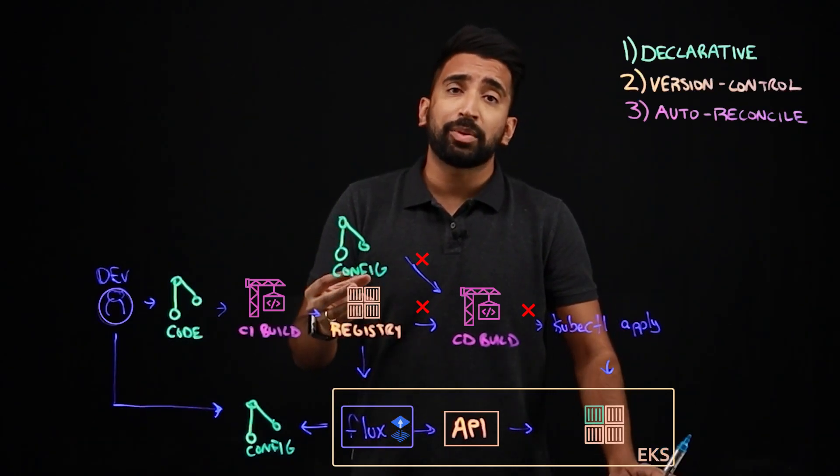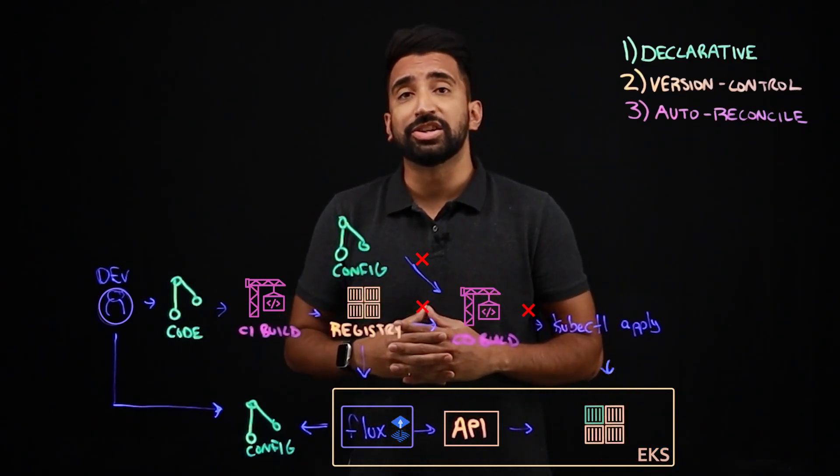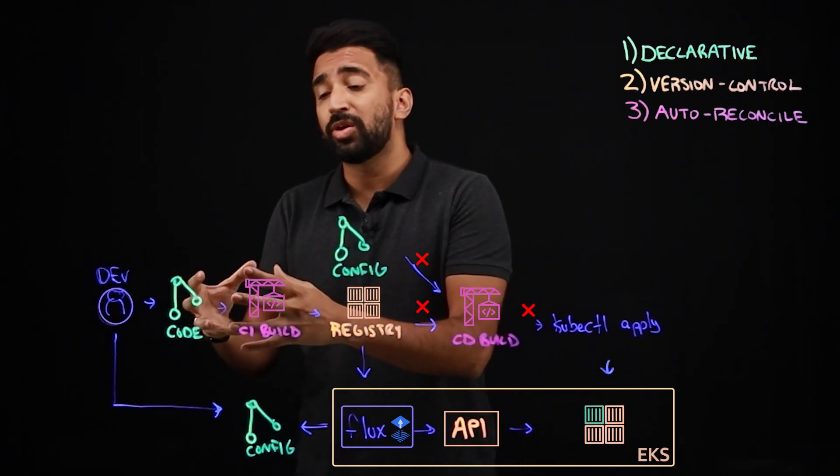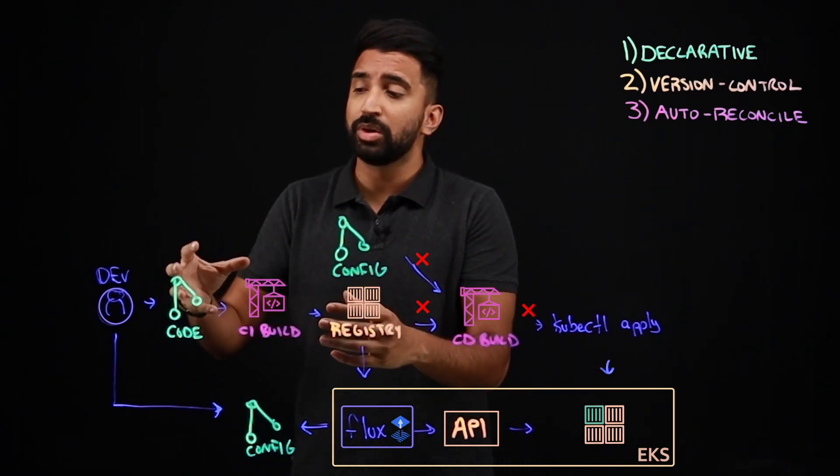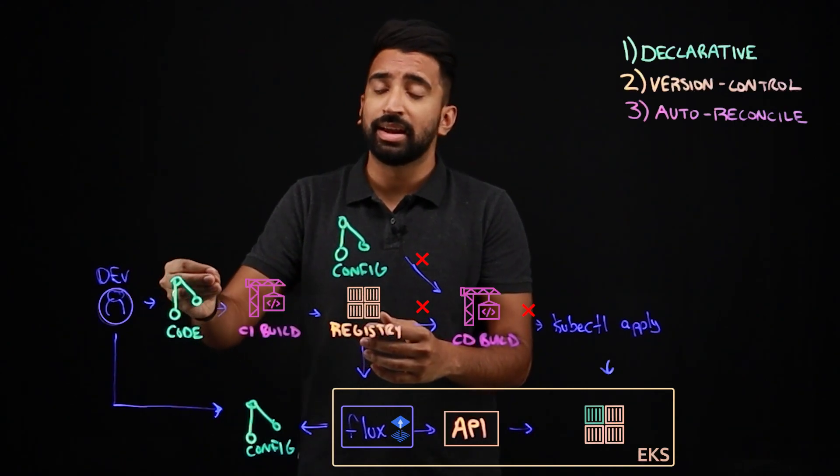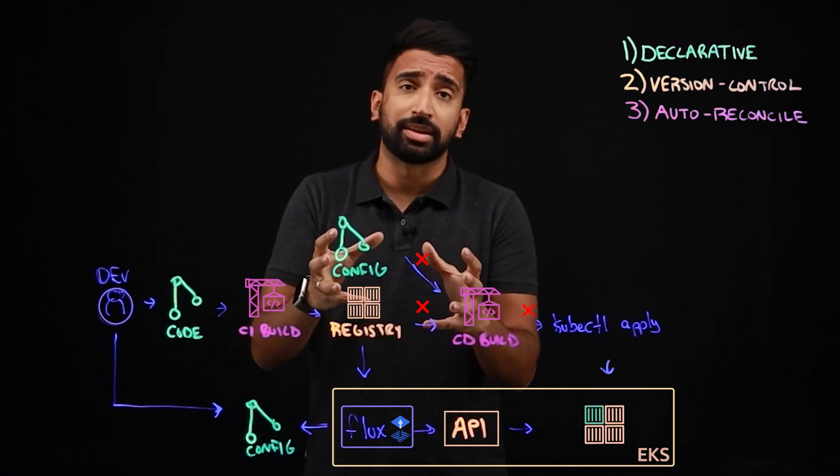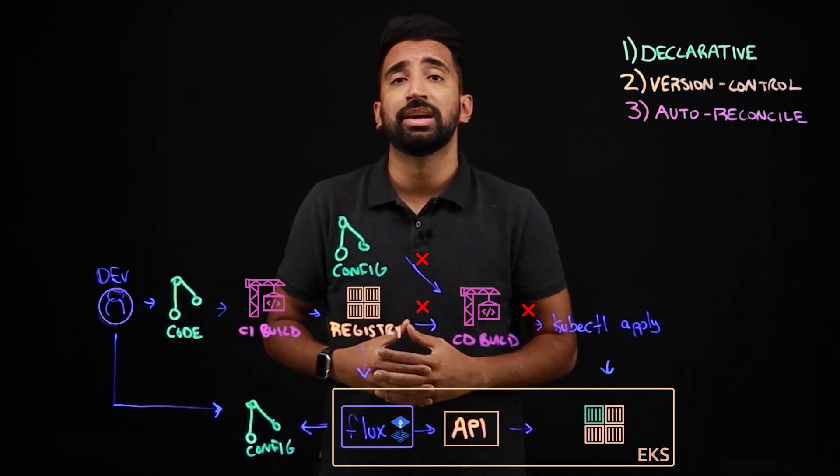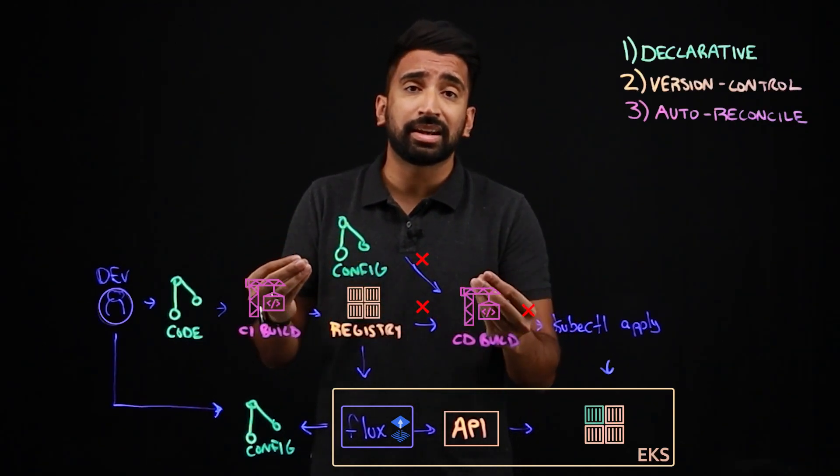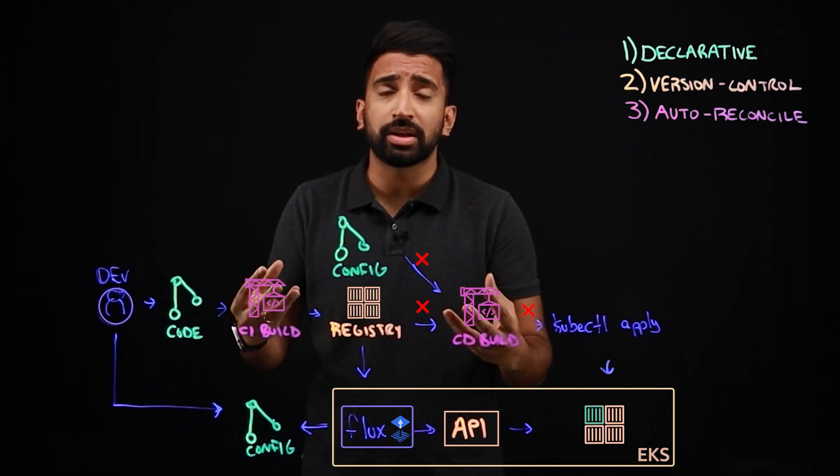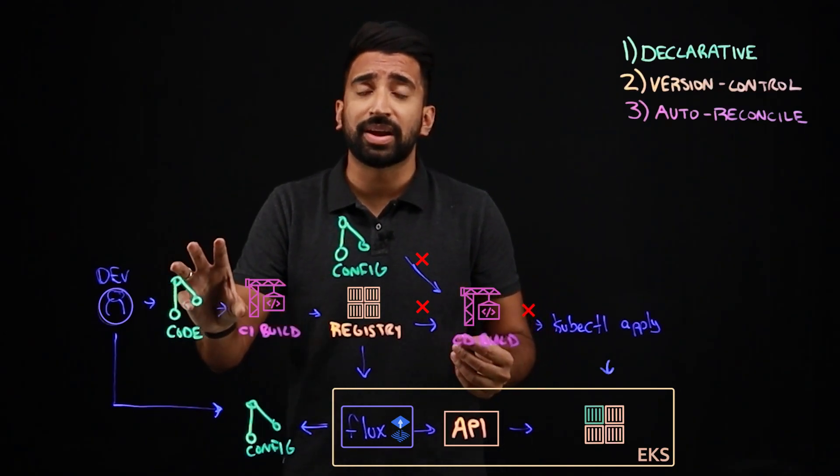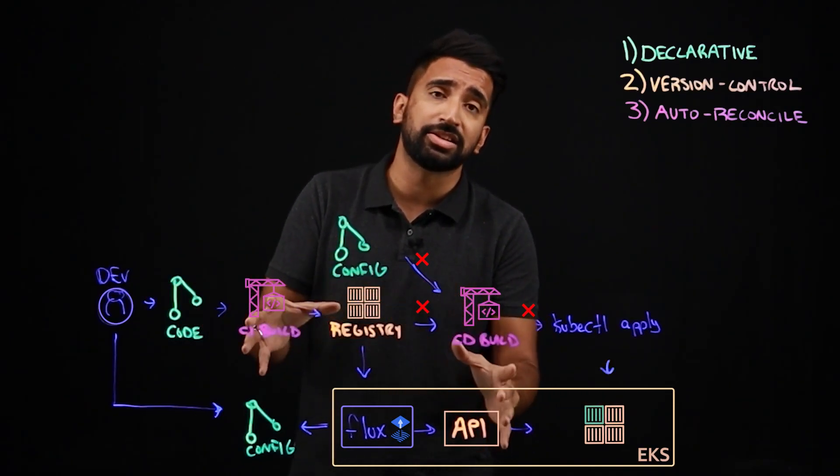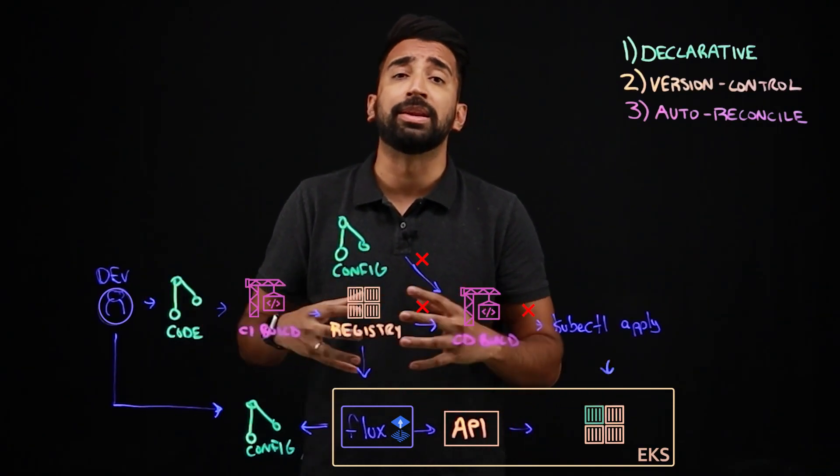And so we can see that with GitOps, we get a number of advantages. There's a separation of responsibilities, as devs can continue to focus on the workflows that they're used to. So deploying code into Git, instead of worrying about how the actual application container images are deployed to a cluster environment. We can take advantage of Git capabilities, things like merge requests or pull requests at this phase to configure where these workflows go, whether it's a dev, test, staging, or prod environment.